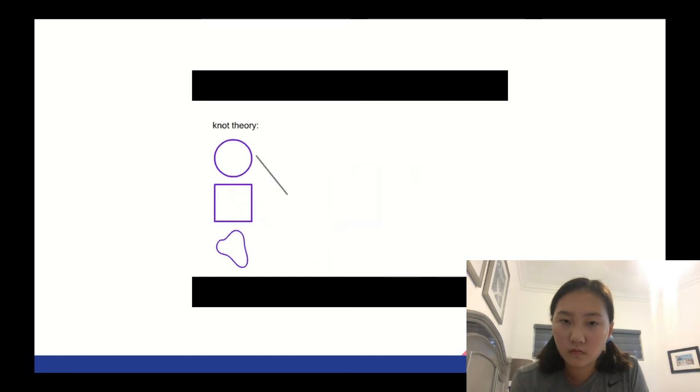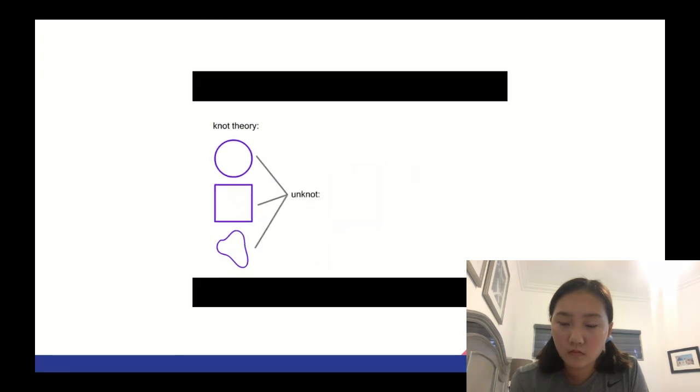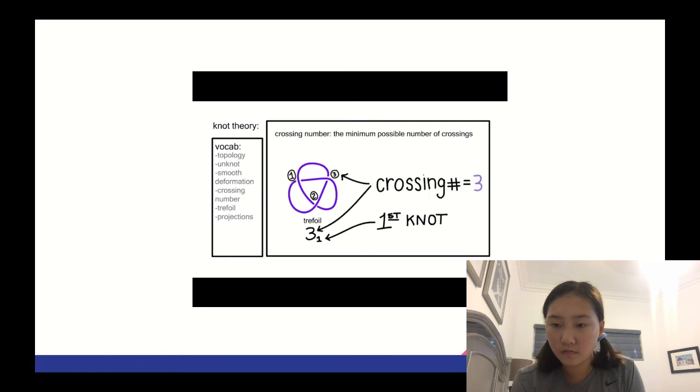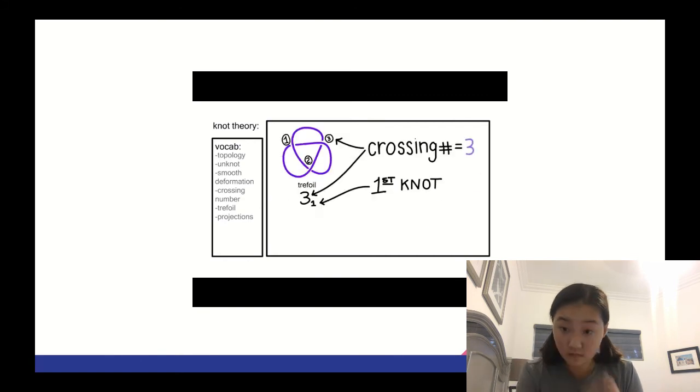In knot theory, these circles are also projections of the unknot, the knot with zero crossings. One way we can distinguish knots is by their crossing number, the minimum possible number of crossings. This is a projection of the trefoil. Knot diagrams are called projections, and are what the shadow would look like, but with the crossing shown. It's also called 3-1, because it's the first knot with a crossing number of 3. The trefoil is also the only unique knot with a crossing number of 3.